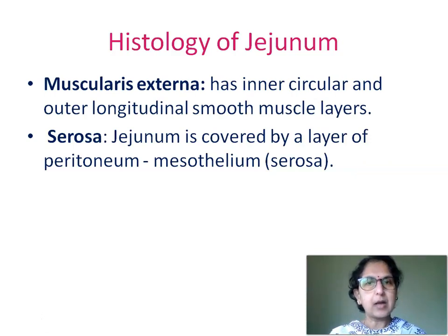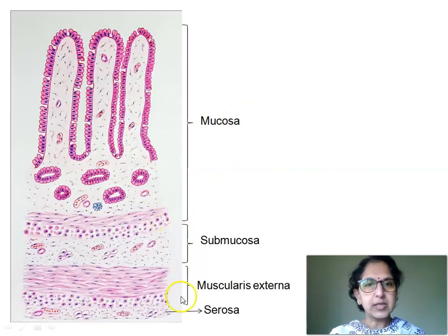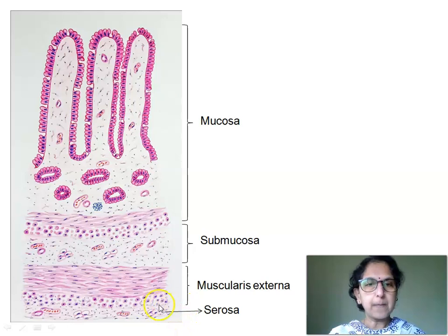The outermost layer is the serosa. Jejunum is covered by a layer of peritoneum — mesothelium — thus showing the presence of serosa. The muscularis externa shows inner circular and outer longitudinally arranged smooth muscle fibers, and the outermost layer is the serosa, having connective tissue, blood vessels, adipocytes, and nerve fibers.